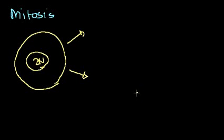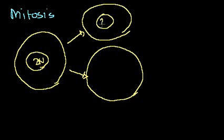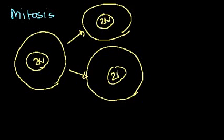So it turns into two cells, each that have a full complement of chromosomes — 2n chromosomes. And when people say a cell has experienced mitosis, they normally mean this.